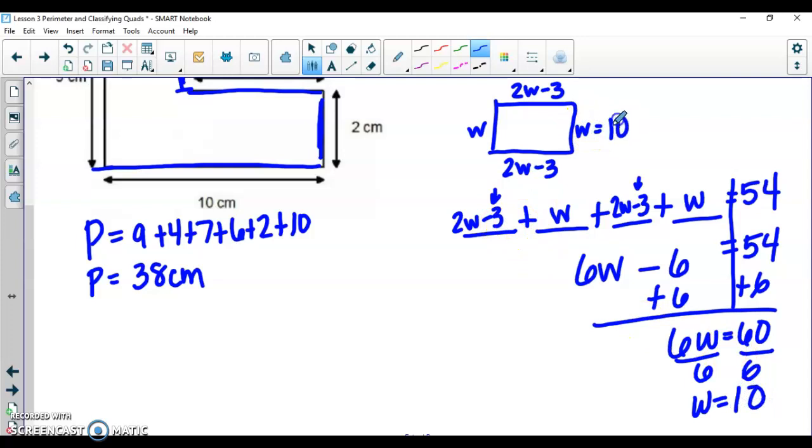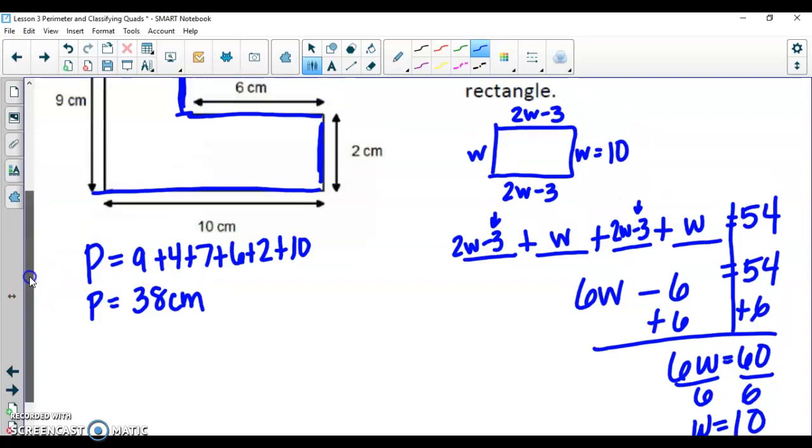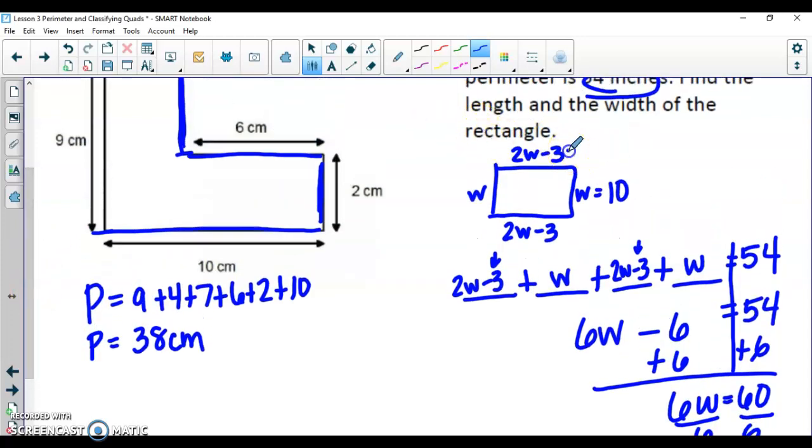So the width is 10, but it also said to calculate the length. So what we're going to do is plug in w as 10. So we're going to have 2 times 10 minus 3. 2 times 10 is 20. 20 minus 3 is 17. And remember, everything was in terms of inches. So the length of this rectangle is 17 inches and the width of this rectangle would be 10 inches.